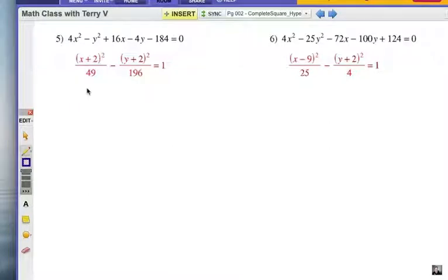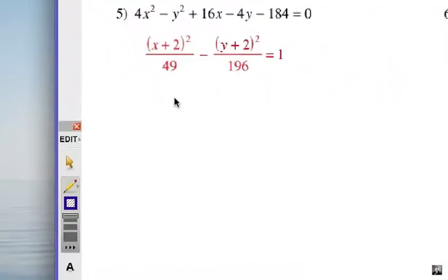All right, number five, you can see the answer here. And I want to show you and work through how we get that. The very first step is to group our x's and y's together and move the constant, which is minus 184, to the other side. So here's what it looks like.